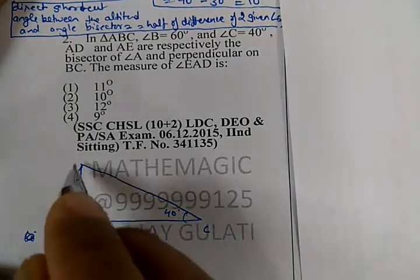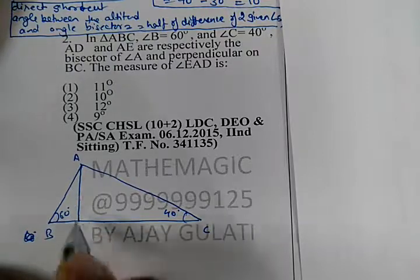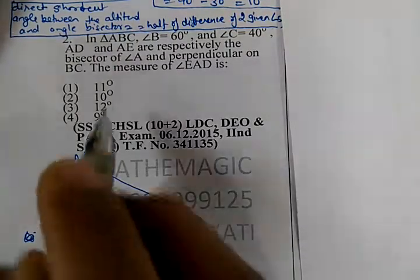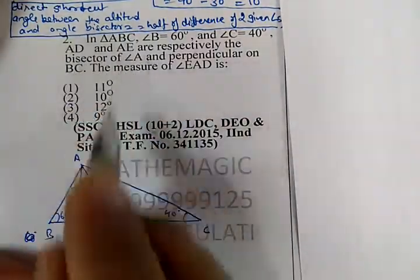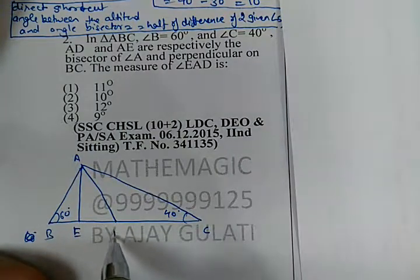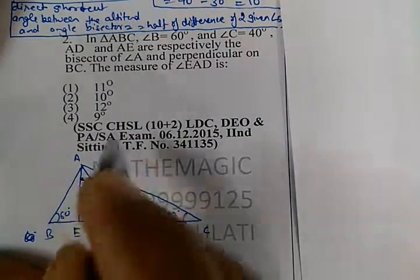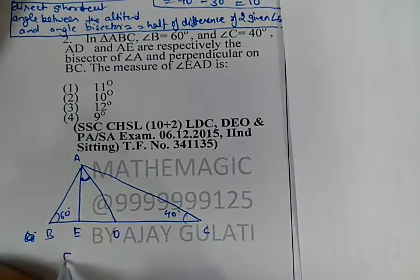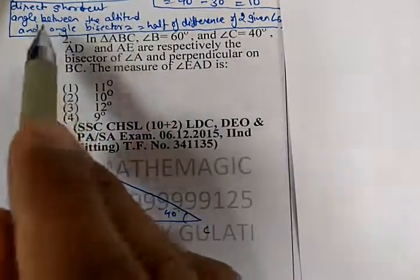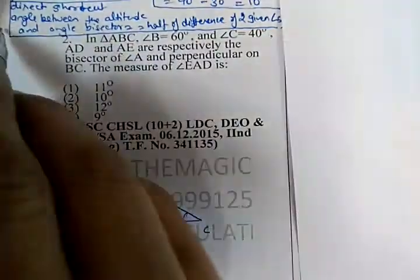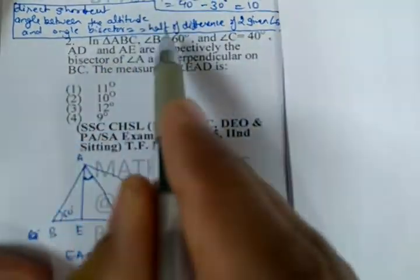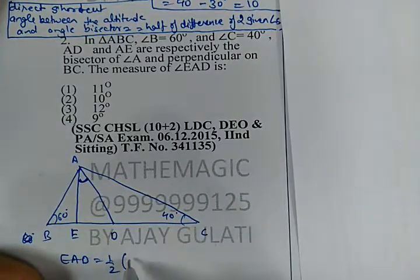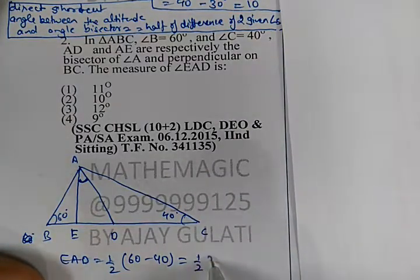AE is the altitude and AD is the bisector. We have to find angle EAD. The angle between the altitude and the angle bisector is equal to half the difference of the two given angles — that is, half of 60 minus 40, which equals 10 degrees.